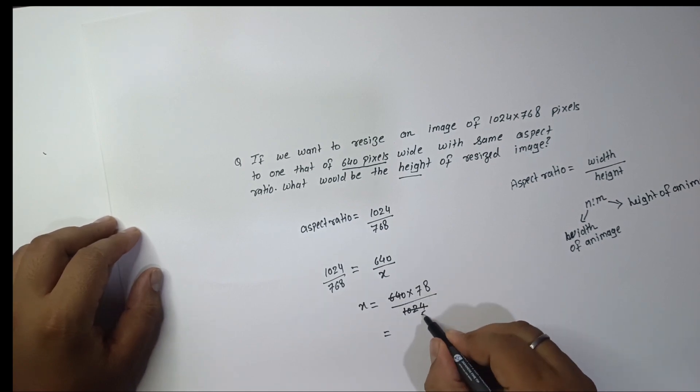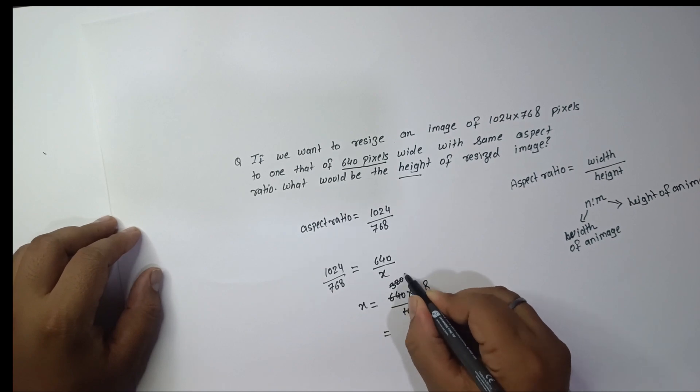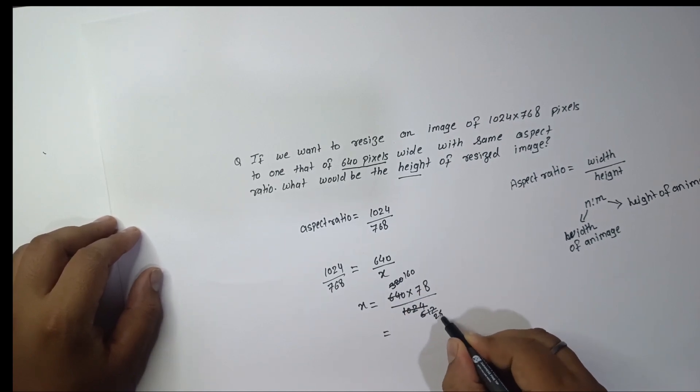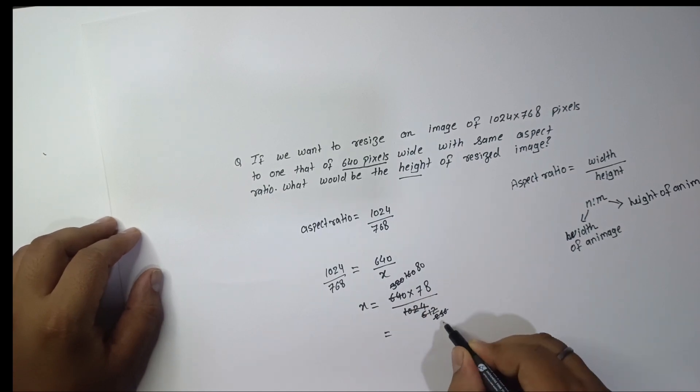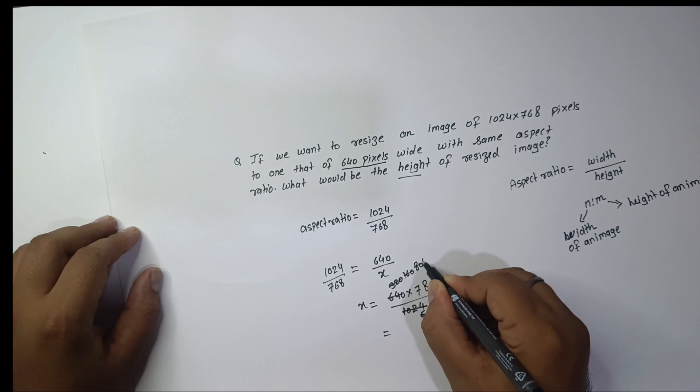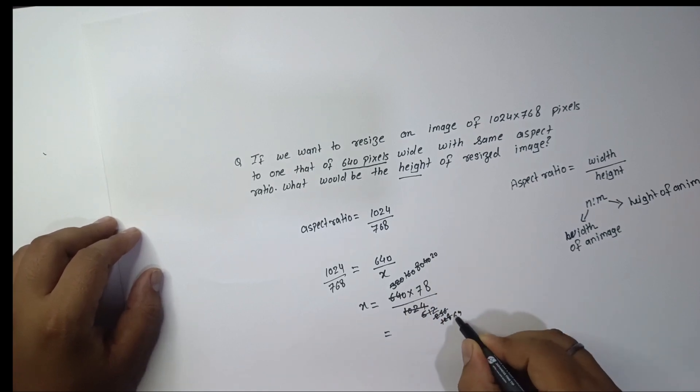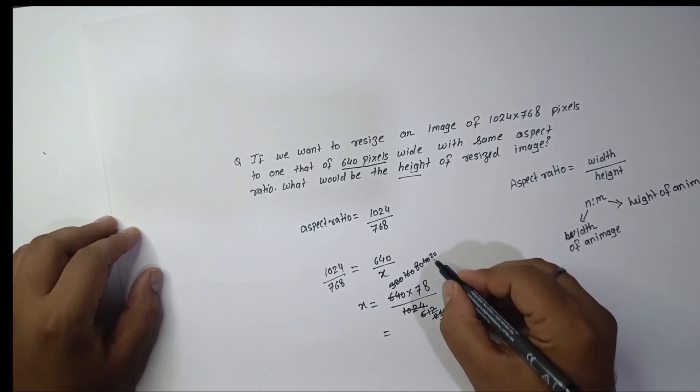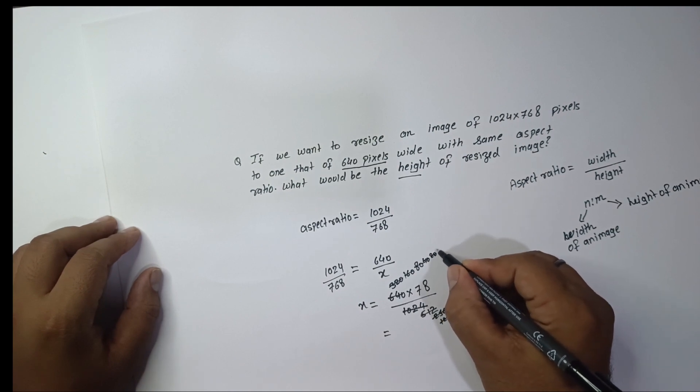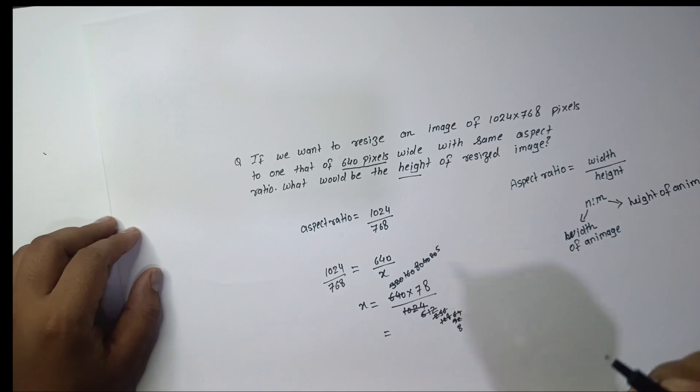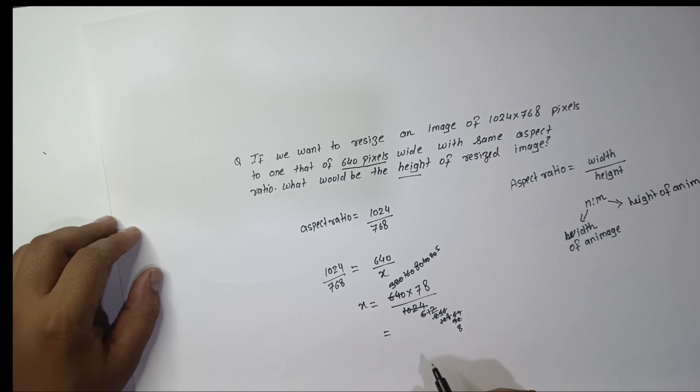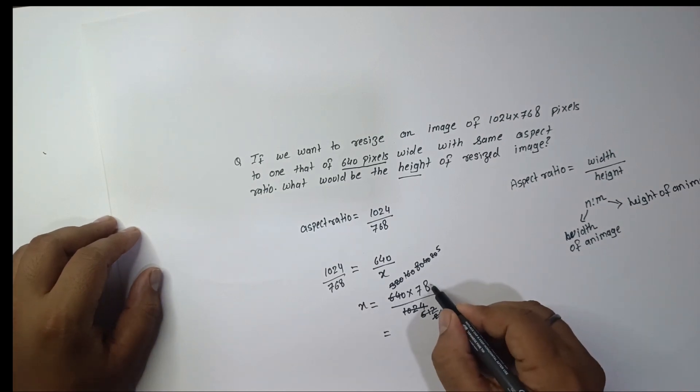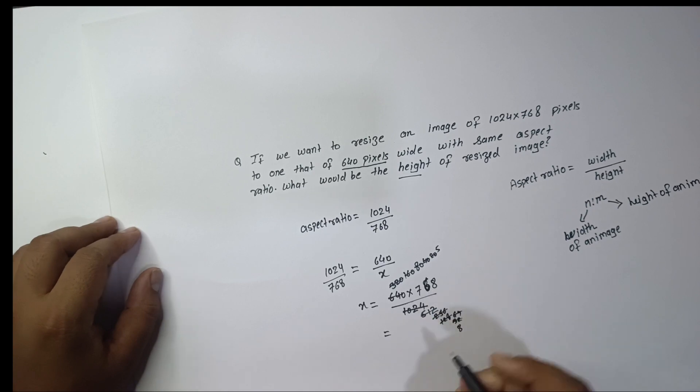So it will be 512, 320, 160, 256, 128, 64, 32. So it is like 5 times 768 divided by 8.